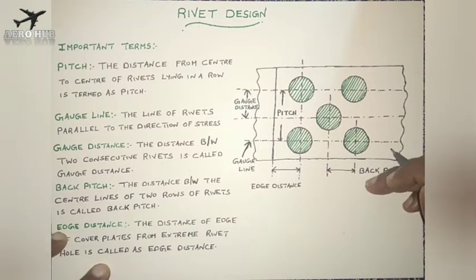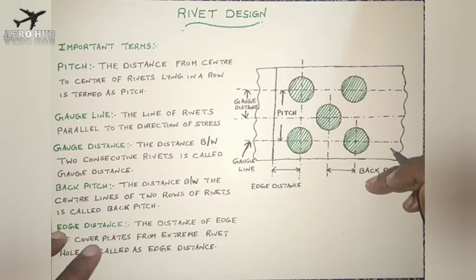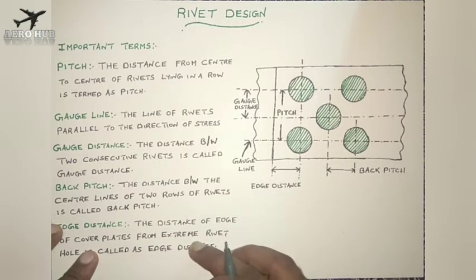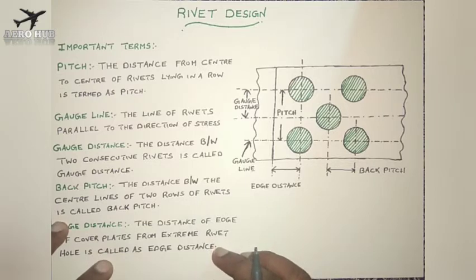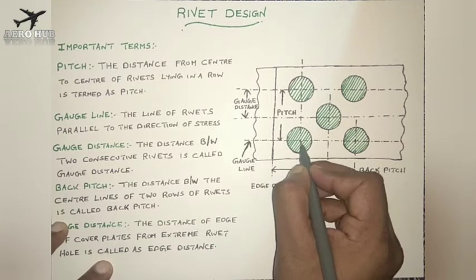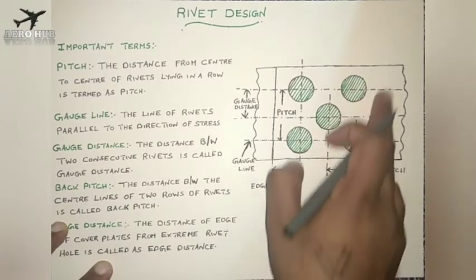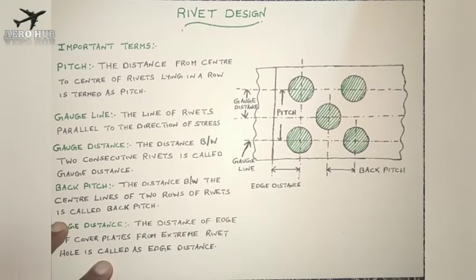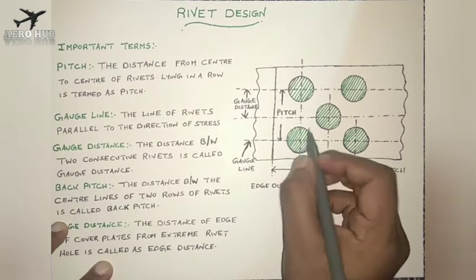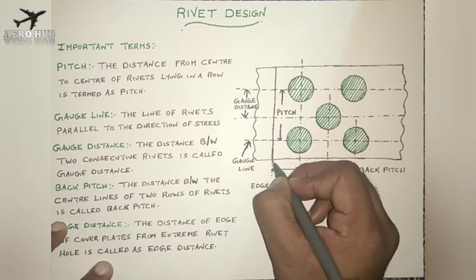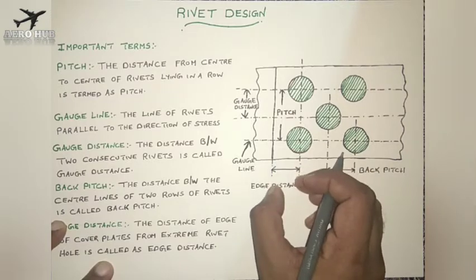The last term, and also one of the most important in rivet design, is called edge distance. This is nothing but the distance of the edge of the cover plate from the extreme rivet hole, which is called edge distance. You can see here these are the extreme rivet holes. The distance between the center of the extreme hole and the edge of the plate is called edge distance.